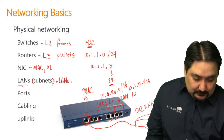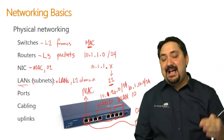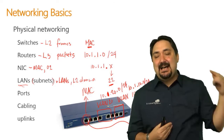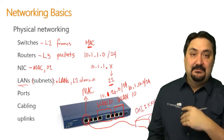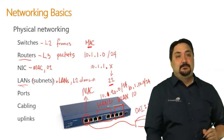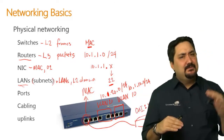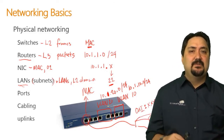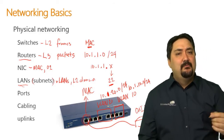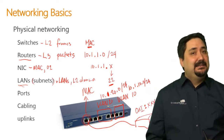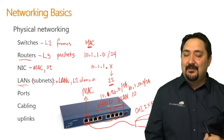I cannot pass traffic from one layer 2 domain to another layer 2 domain unless I have a layer 3 device, and often that device is a router. If you're having trouble with subnets, I'd look at a subnetting course offered by Stormwind — they really help explain this in more detail.